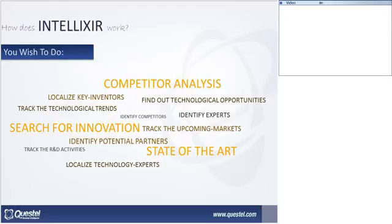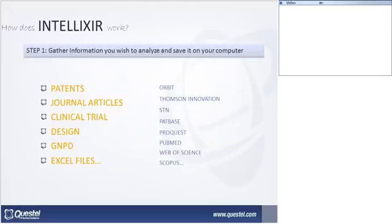So how does Intellixier work? The first step is to gather information that you wish to analyze. Maybe you have Orbit and you will export patents from Orbit or other data providers. You might need to analyze journal articles or clinical trials. The first step is to define your needs, go to a different data provider, and export the data to save it on your computer.